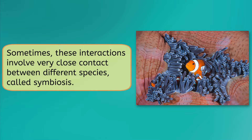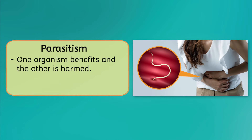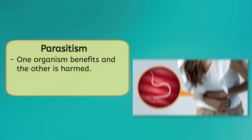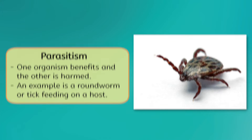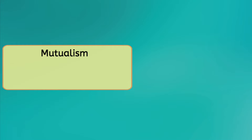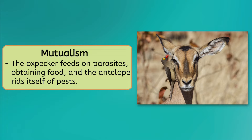There are three forms of symbiosis we will discuss in this lesson. The first is parasitism, which is when one organism benefits and the other is harmed. The parasite does not immediately kill its host, but lives on it or within it, helping itself to resources over time. An example of this is a roundworm or tick feeding on a host. The parasite benefits by obtaining food, and the host is harmed by losing resources.